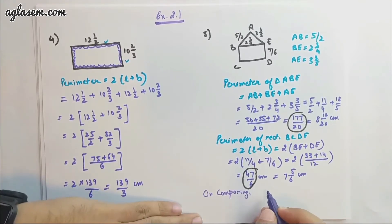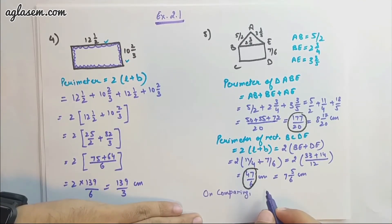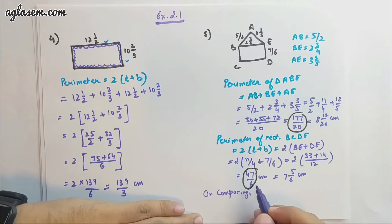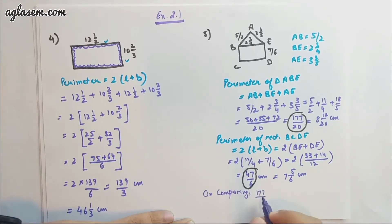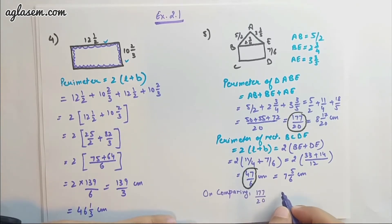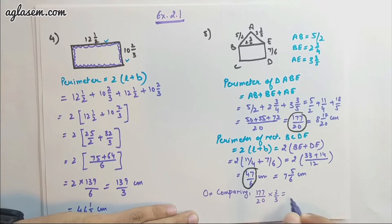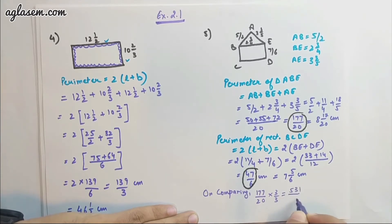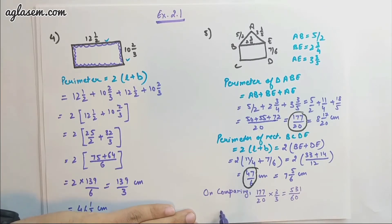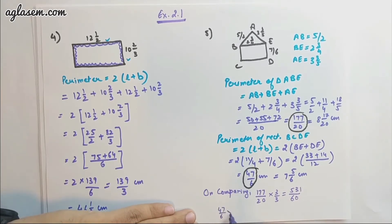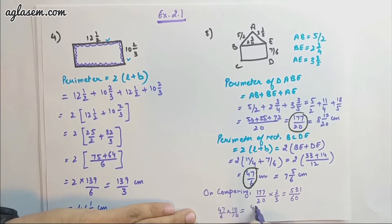How will we find whether 177/20 is greater than or less than 47/6? We'll convert them to the similar format. 177/20 converted into 60 format - multiply by 3 both sides, so you get 531/60. Similarly, 47/6 - multiply it by 10, so we have 470/60.